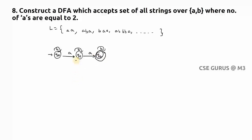Now observe: is it a complete DFA? Q0 on A — yes, Q0 on B — yes, Q1 on A — yes, Q1 on B — yes, Q2 on B — yes. But what about Q2 on A? That transition is missing. If a third A comes, it has to go to a non-final state, so I'll create a dead state Q-dead and connect Q2 on A to it, since any number of A's greater than 2 leads to rejection.